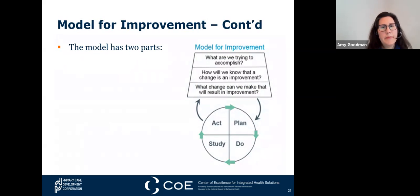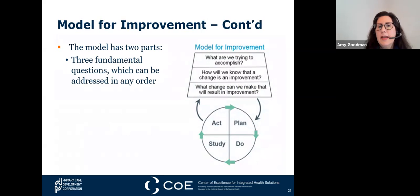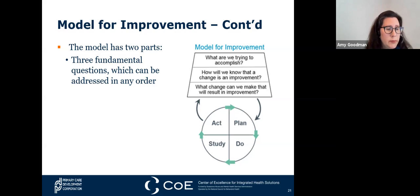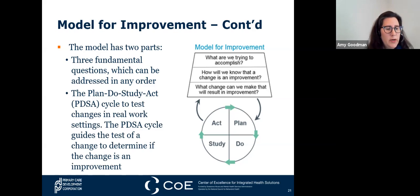The model for improvement has two parts. On the right is the model itself, which has three fundamental questions that can be addressed in any order: What are we trying to accomplish? How will we know that a change is an improvement? What change can we make that will result in improvement? While all changes do not lead to improvement, all improvement requires change. The questions inform what the PDSA cycle will test, and then the results of the PDSA cycle circle back to the questions to determine what is still needed for improvement.